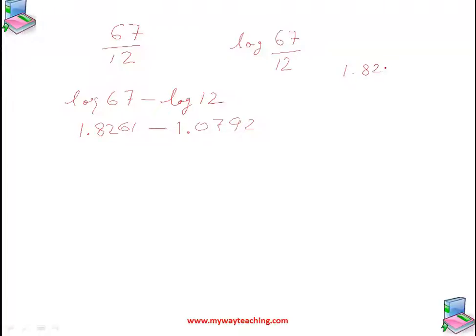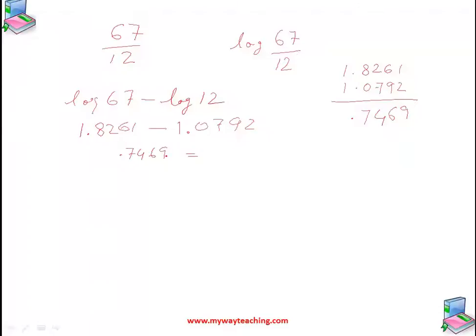Now we do the subtraction: 1.8261 minus 1.0792. Working through the digits: the result is 0.7469.